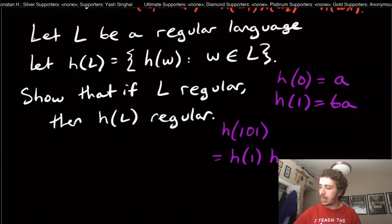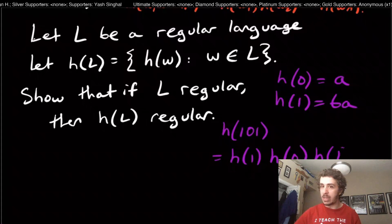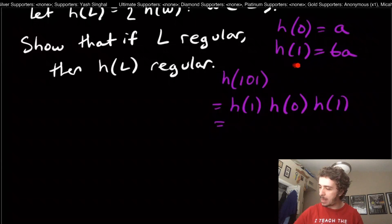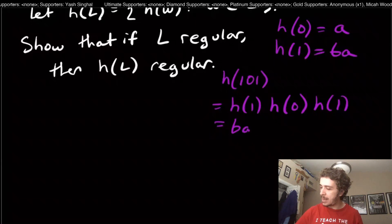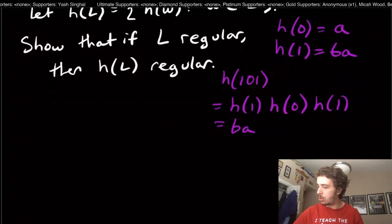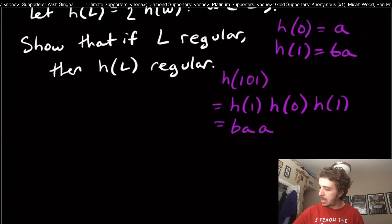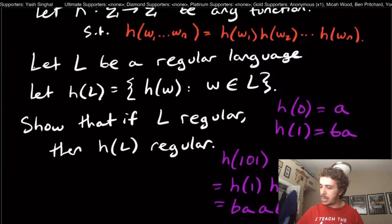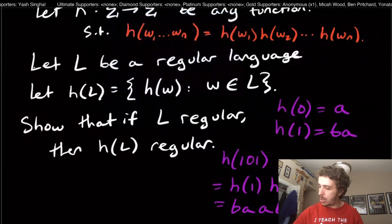Copying from our definitions: H(1) is BA, H(0) is a, and then H(1) at the end is another BA. So H(101) = BA·a·BA. This property is called the homomorphism property.